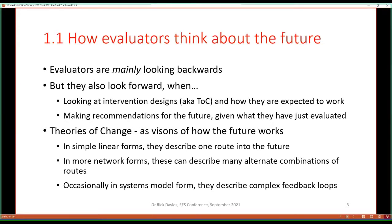Theories of change have been an area of interest of mine for quite some time, particularly how you represent them. Most often you'll find theories of change in a fairly simple linear form, describing one route into the future that a project expects to take. In some cases, you get a more networked representation — multiple different combinations of routes that might be taken, which is more accurate but has its own problems. And occasionally we get theories of change in systems model forms, including complex feedback loops that function as simulations, but they are fairly rare.